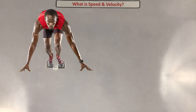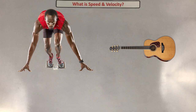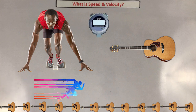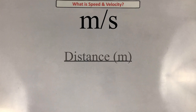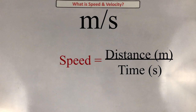Usain Bolt is currently the fastest man documented — his top speed is 12 meters per second, which is a ridiculous speed. A standard guitar is roughly one meter long, meaning you can line up 12 of them in a straight line and it will take him one second to cross that distance. Looking at the units, distance in meters divided by time in seconds gives us speed in meters per second.